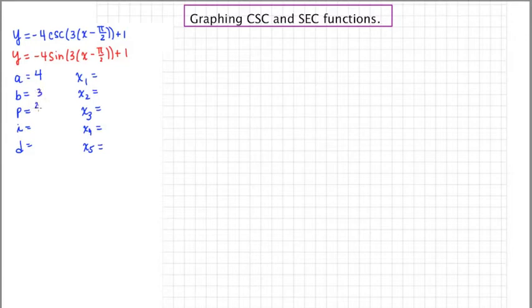The formula for period is 2 pi over b. More specifically for this problem, it's 2 pi over 3.